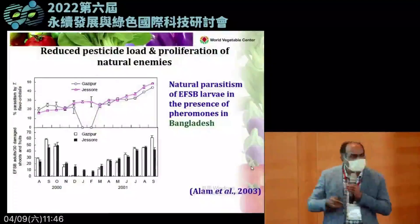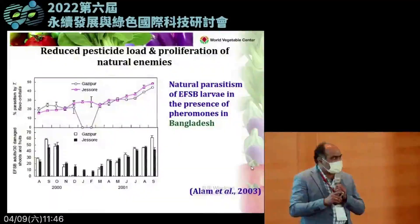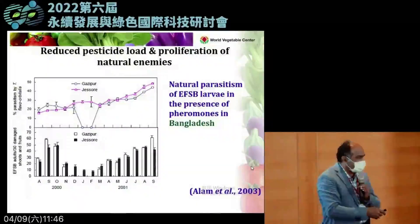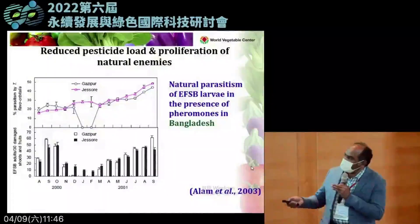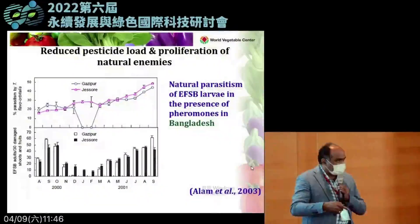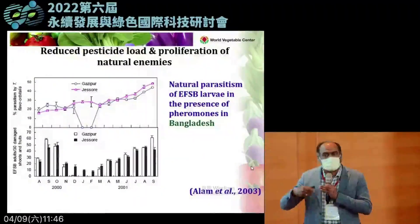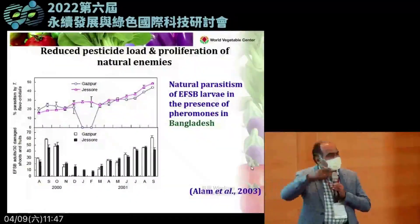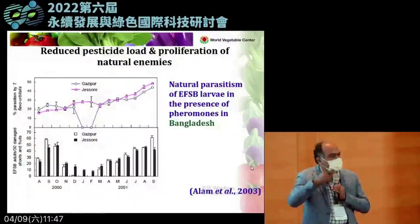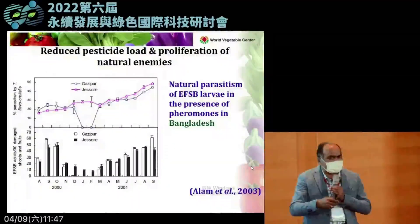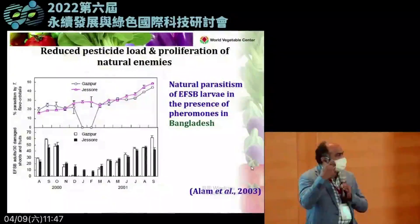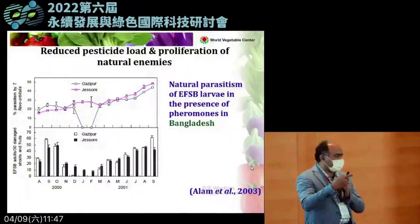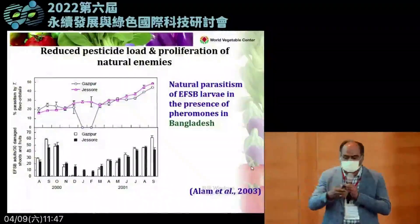Most importantly, the moment you remove chemicals from the agricultural field, you help biodiversity increase in field conditions. The biodiversity then takes care of pests and diseases over time. When you use safe technologies for a couple of years, you no longer need to rely on external inputs — you build sustainability into the system by adopting safe production technologies.